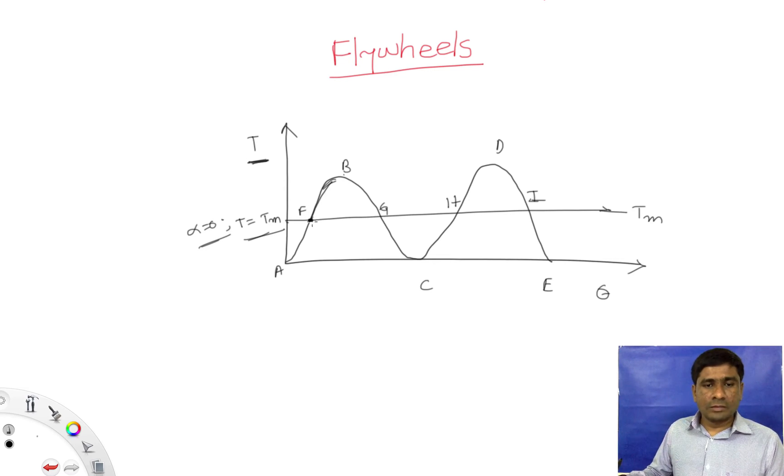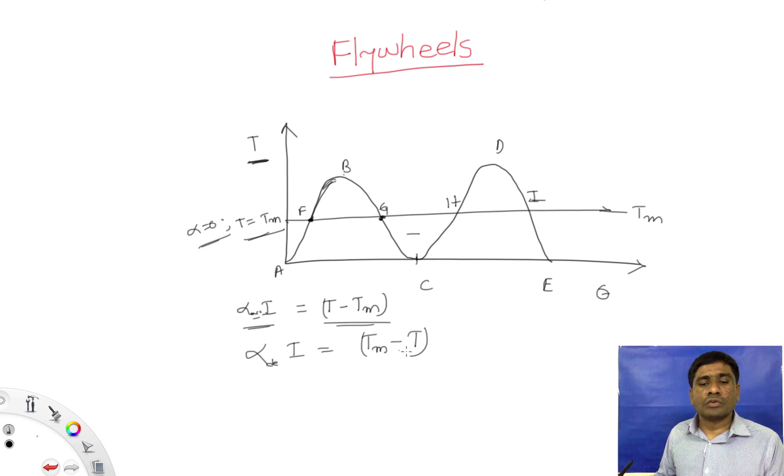But when the crank is rotating from F to B, it's gaining some acceleration because of the increased speed. So the acceleration gained when the crank is rotating from F to B is when torque is T minus T mean. That is I times alpha equals angular acceleration. In the same way, when the crankshaft is rotating from G to C, this engine or crankshaft will be decelerated because of the deficit area. Here also, angular velocity deceleration times I equals T mean minus T, because here T produced is less than T mean.